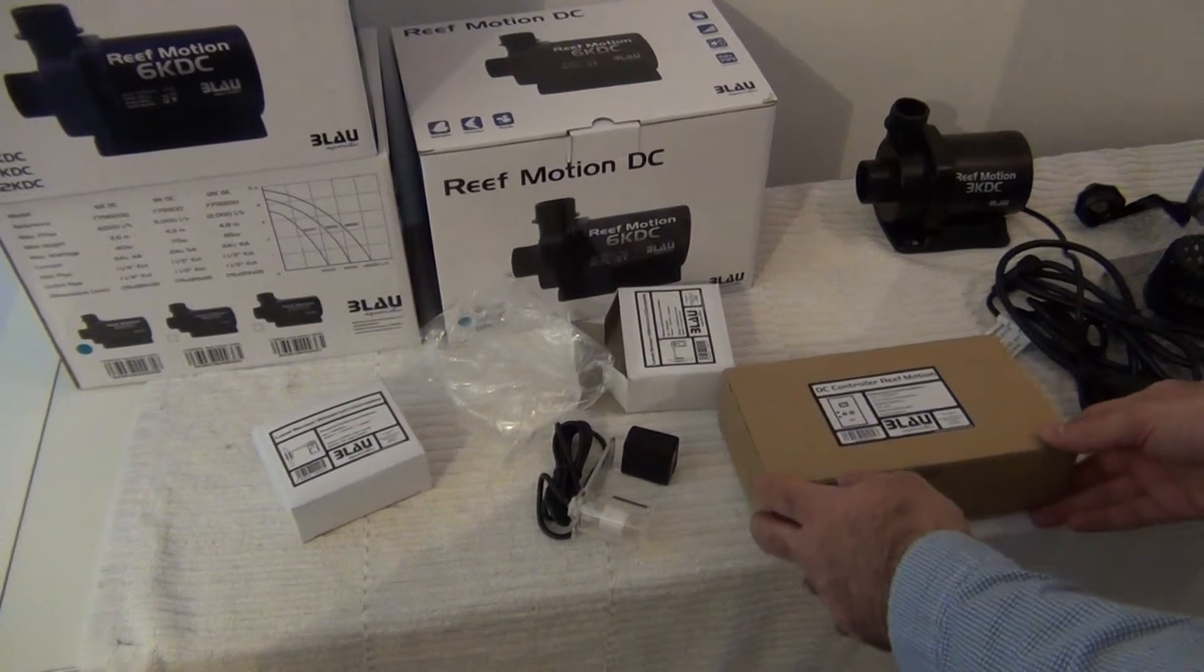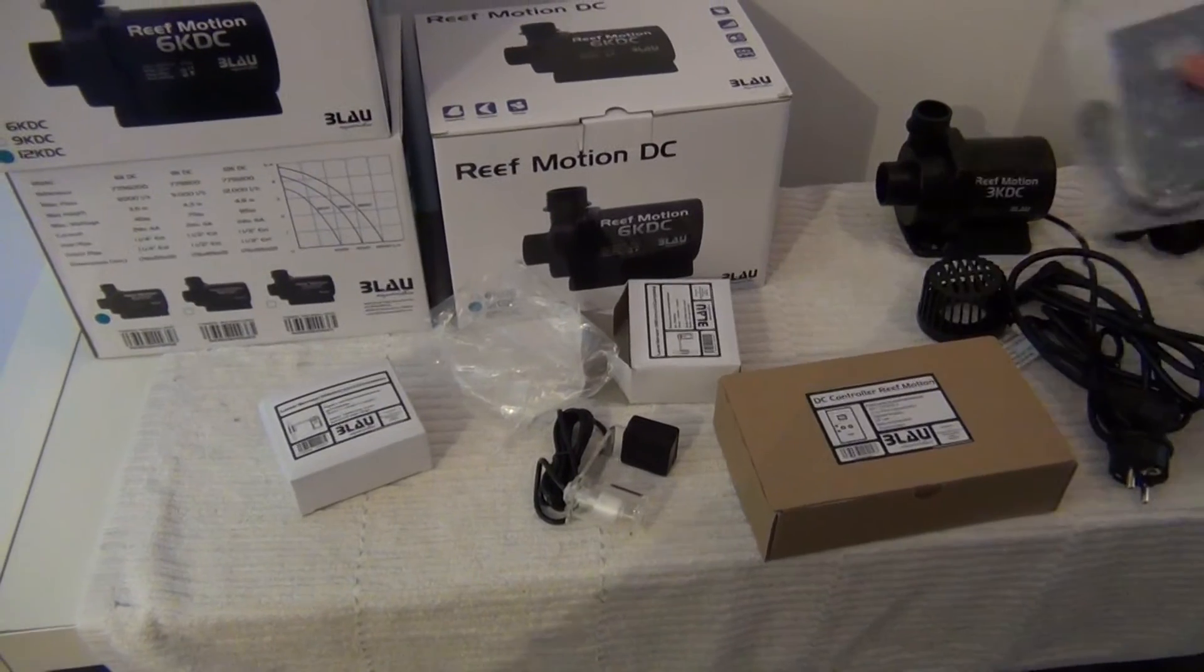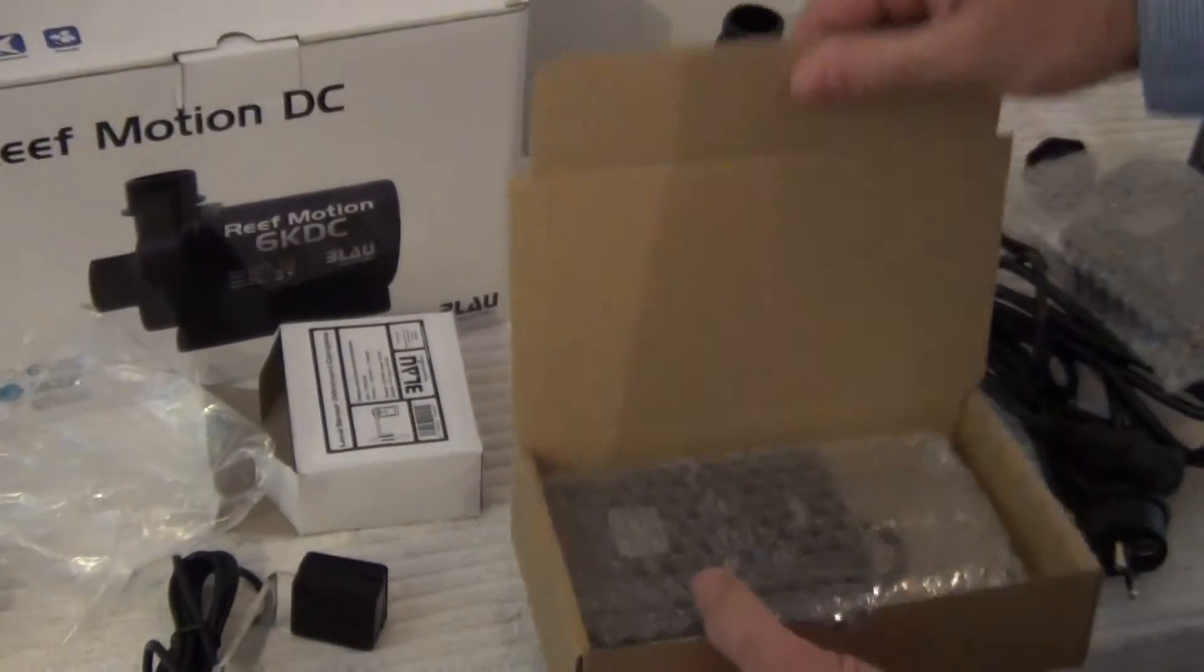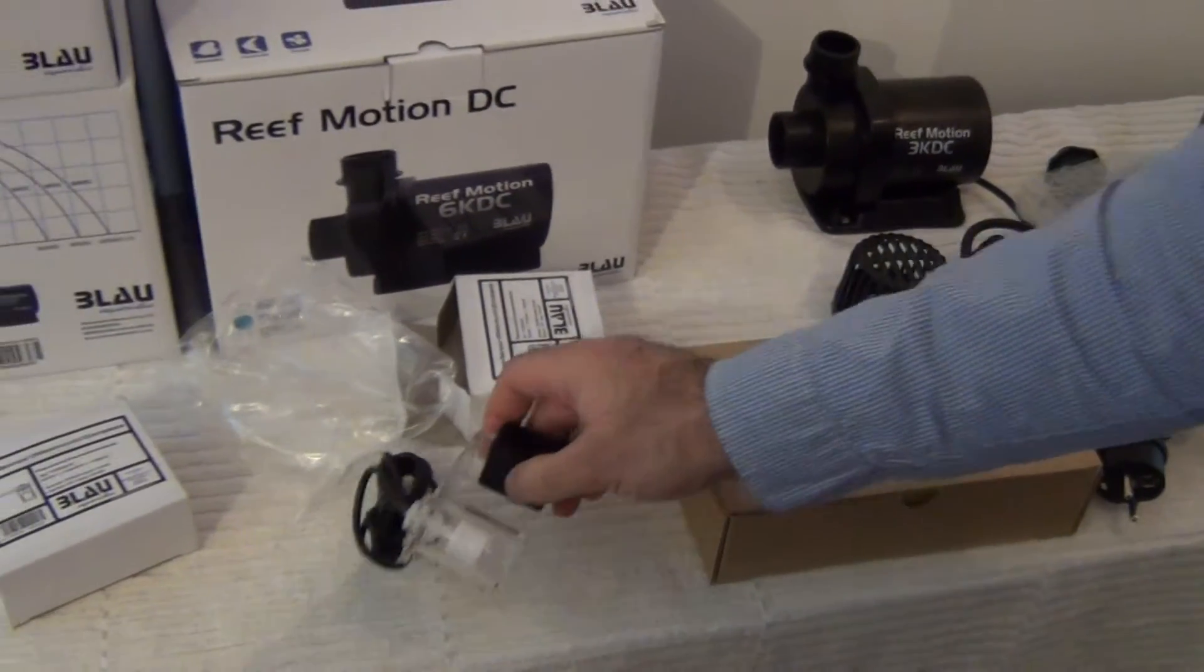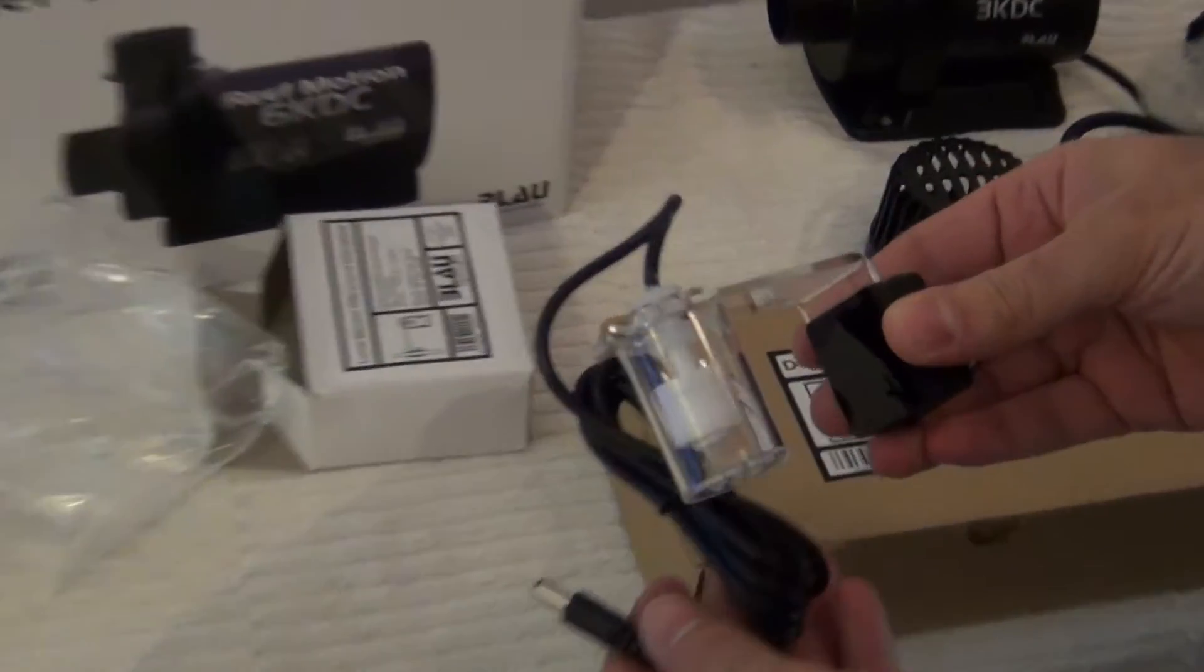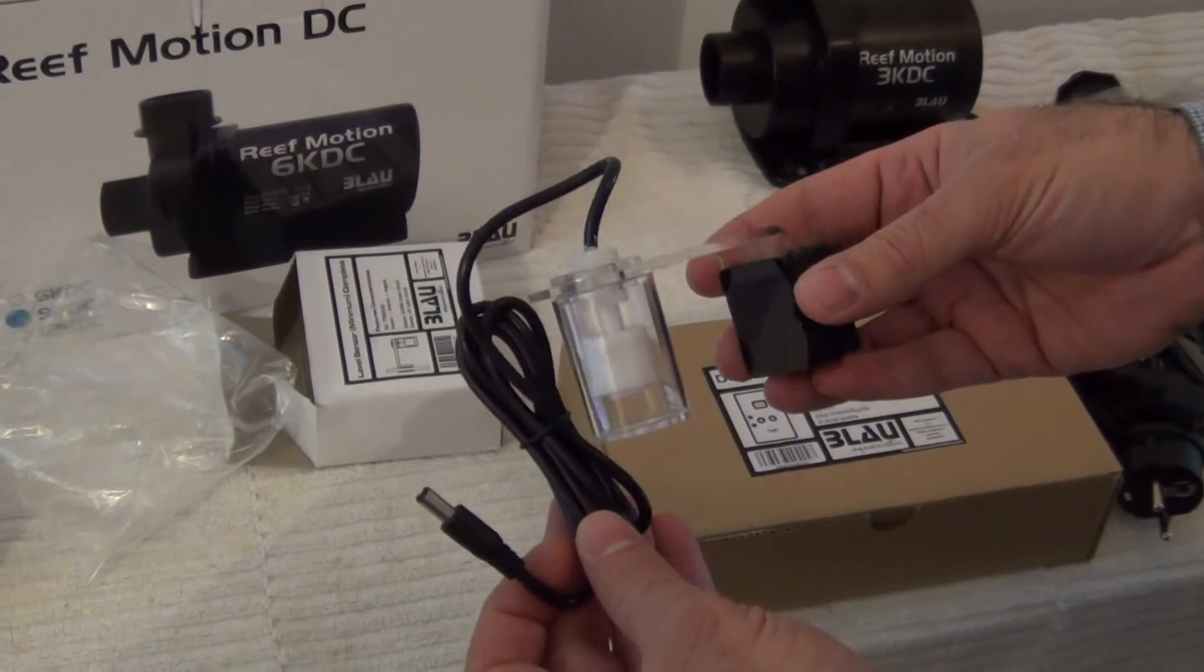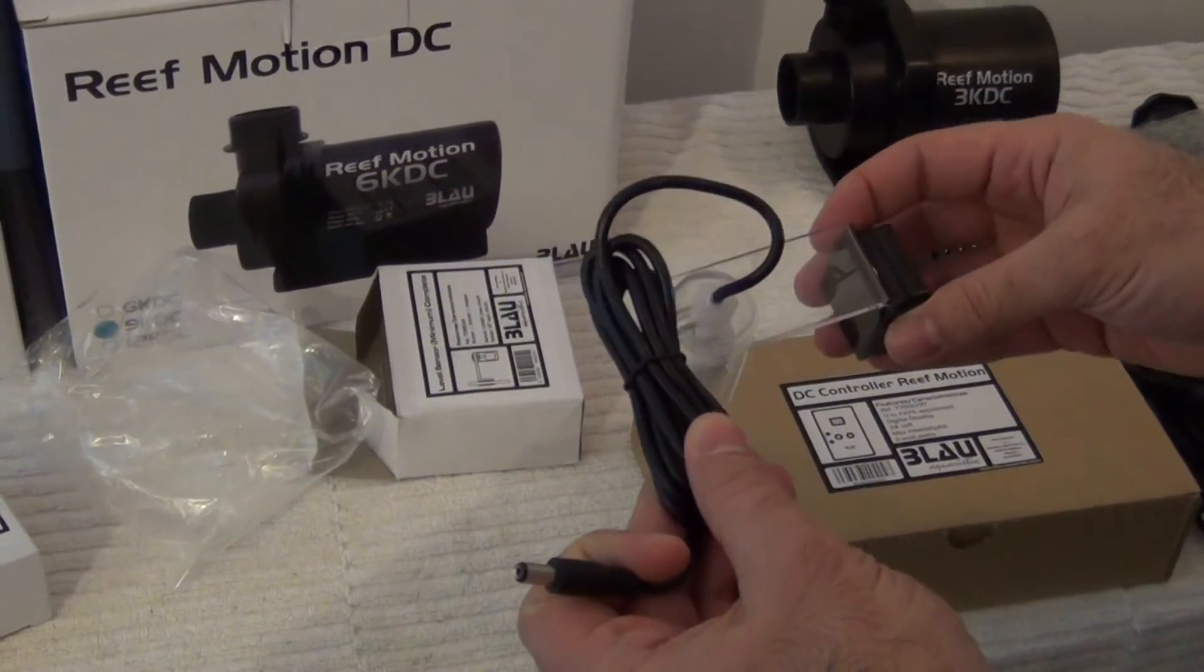The Blau Reef Motion DC pumps come with a controller, mainly this one right here. However, it can also be purchased separately from Aquariatech.eu. Now, what's great with this controller is that you can attach level sensors to it, a minimum and maximum level sensor, and what it does is it will automatically cut off the power to the pump. This will become a bit more important when we talk about this later on.